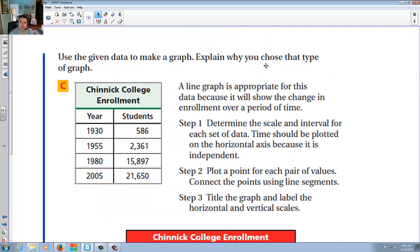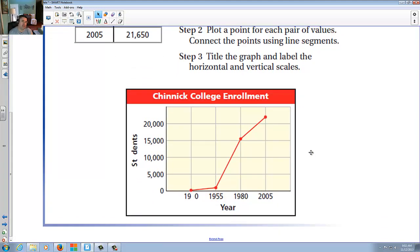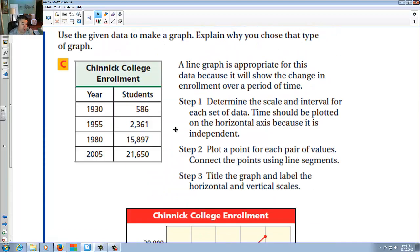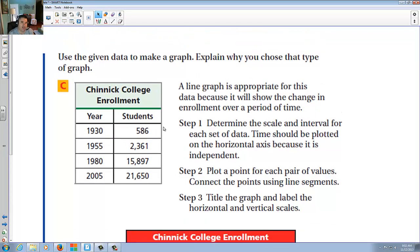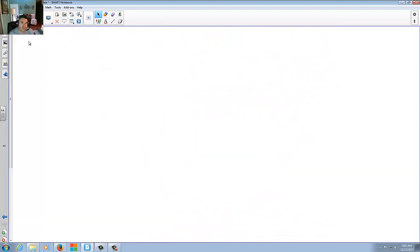Given the data to make a graph, explain why you chose the type of graph. In this case here, they have different years and they have different student amounts that say a line graph is appropriate for this data because it will show the change in enrollment over a period of time, like this here. That's true. You could also have a bar graph, you know, there's not, there's no one size fits all. So in this case, my feeling is provided that you are able to coherently put the data, I don't care if it's a line graph or a bar graph or anything like that. Clearly a circle graph might be hard in this case, because we're trying to show growth. And that's that.